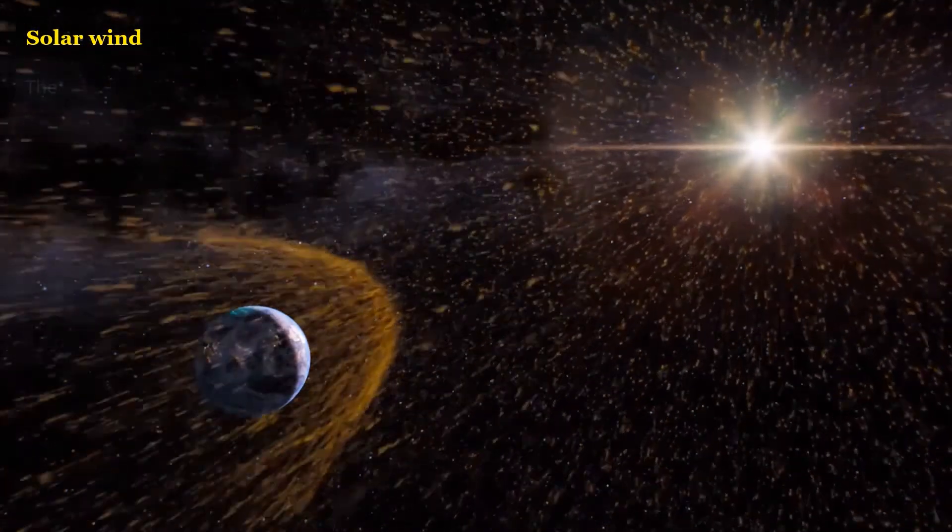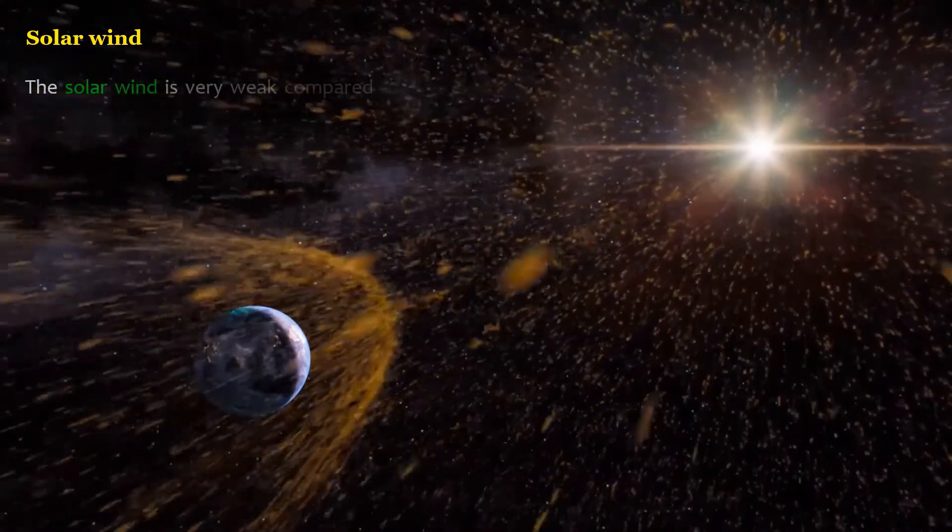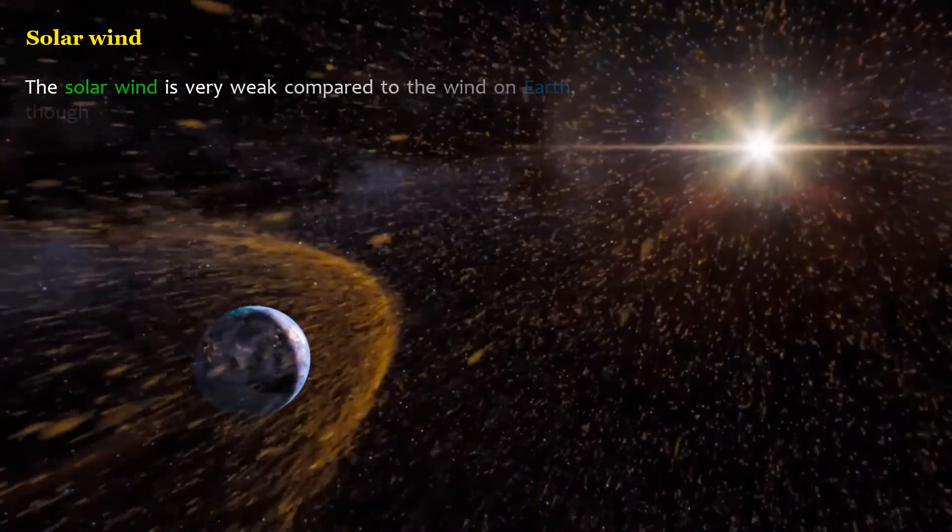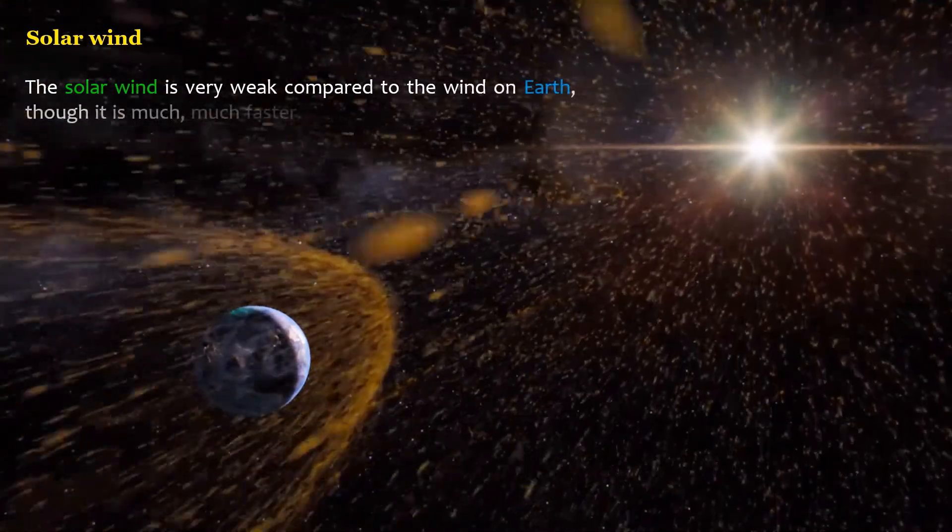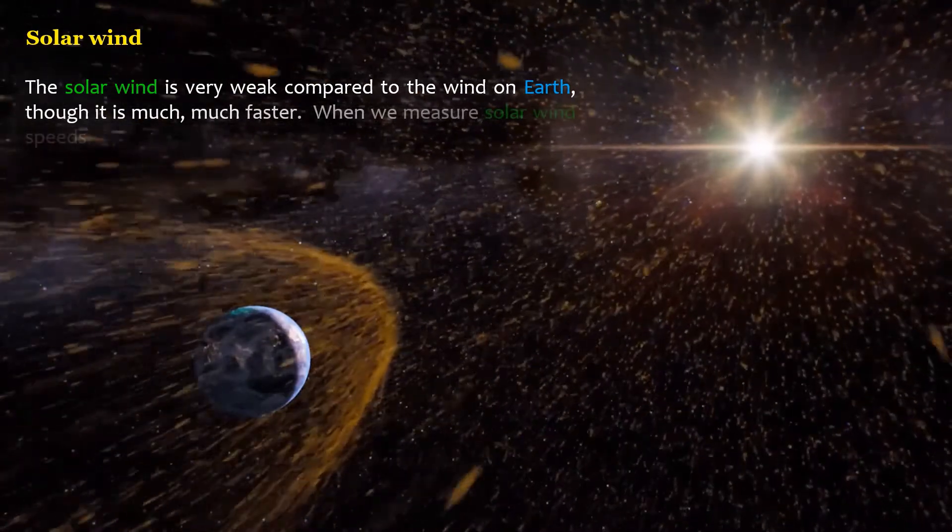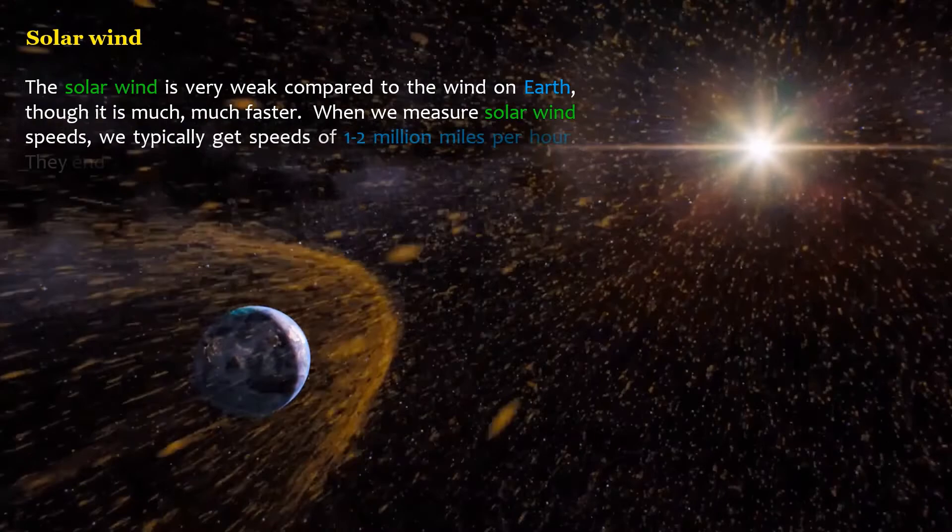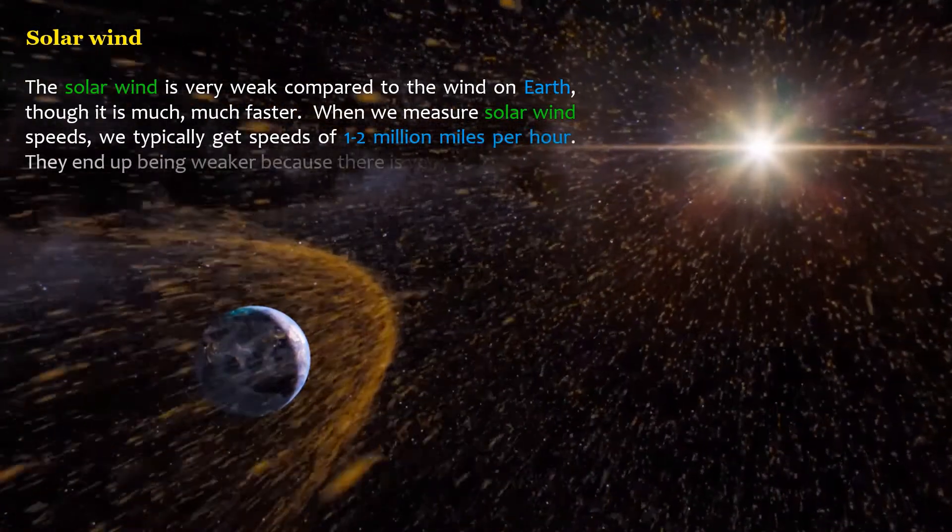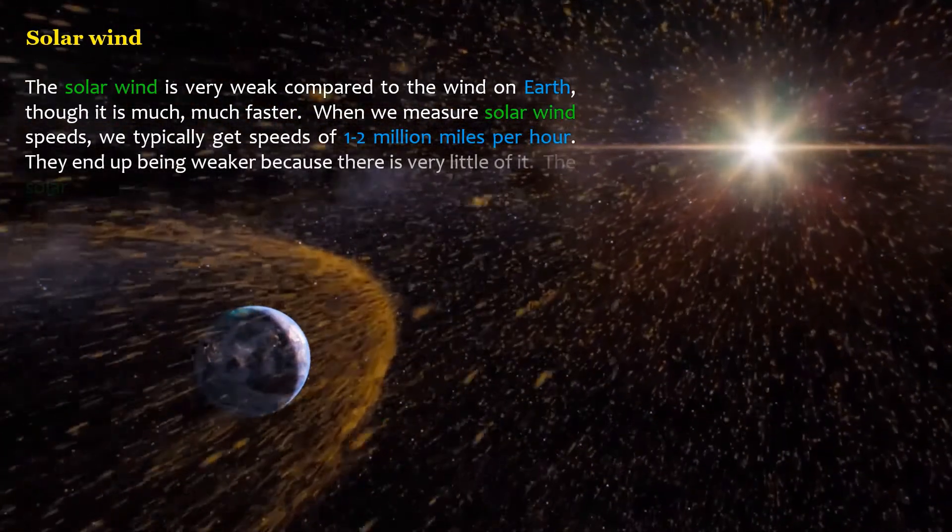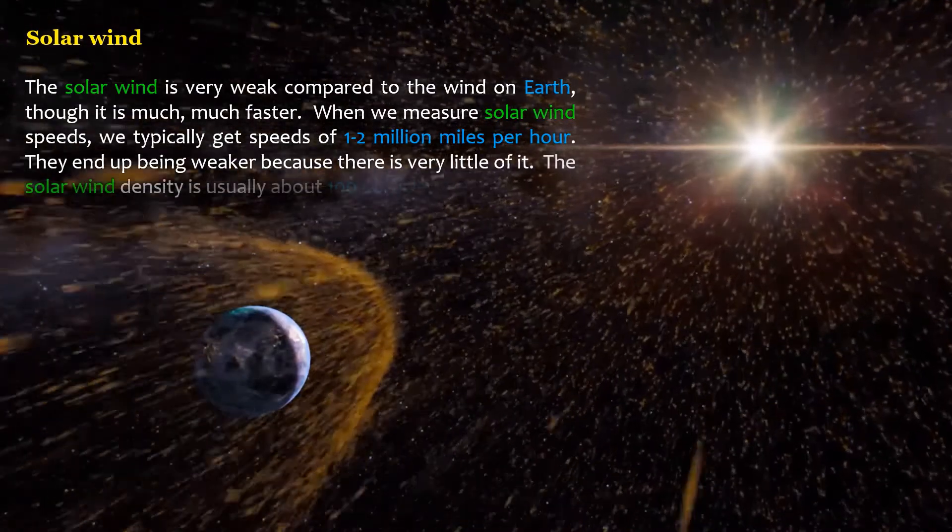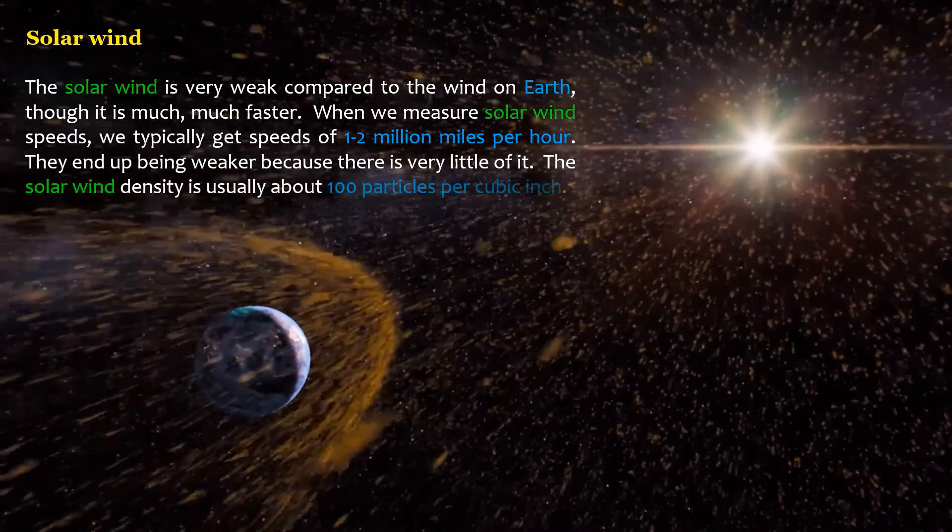The solar wind is very weak compared to the wind on Earth, though it is much faster. When we measure solar wind speeds, we typically get speeds of 1 to 2 million miles per hour. They end up being weaker because there is very little of it. The solar wind density is usually about 100 particles per cubic inch.